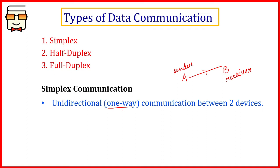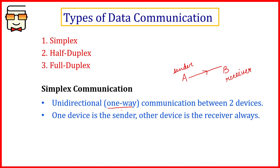Just like a boss gives instructions and you listen — the boss will always give instructions and you cannot instruct your boss in normal cases. So it is a unidirectional communication happening between two devices. In this kind of communication, the roles of the two devices are always fixed: one device will always be the sender and the second device will always be the receiver. So if A and B are doing simplex communication, data will always be sent from A to B. B will never send data — it will always be the receiver.